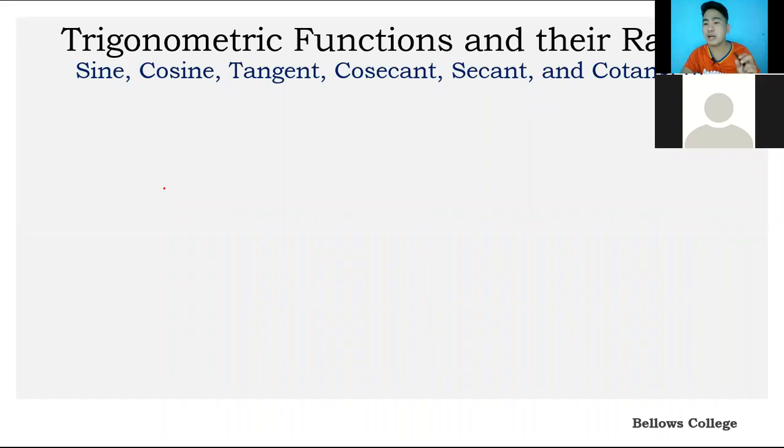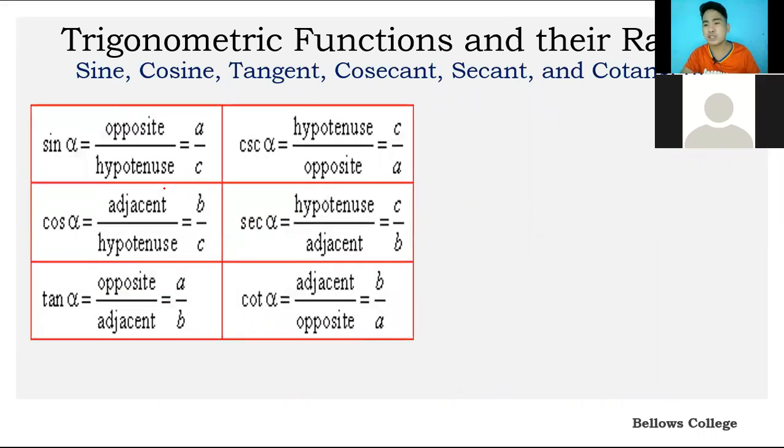Now what are the ratios of these? Here are the ratios in the table. Let's focus on angle A. Sine A equals opposite over hypotenuse. Cosine is adjacent over hypotenuse. Tangent is opposite over adjacent. Cosecant is hypotenuse over opposite. Secant is hypotenuse over adjacent. Cotangent is adjacent over opposite.